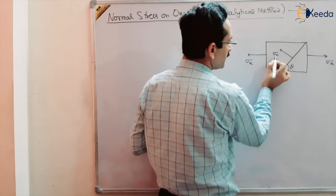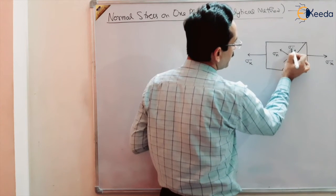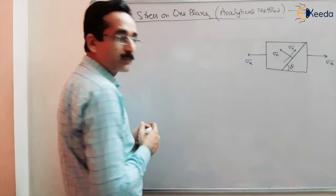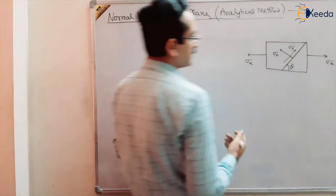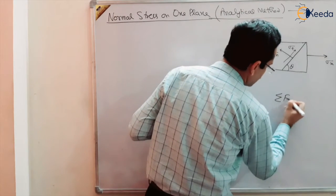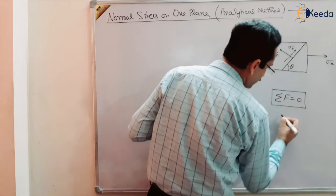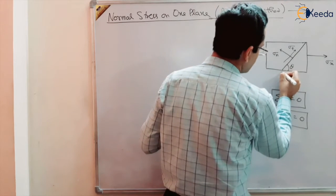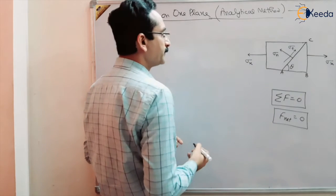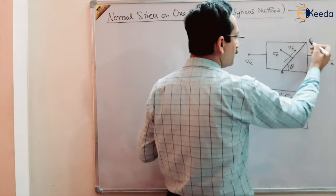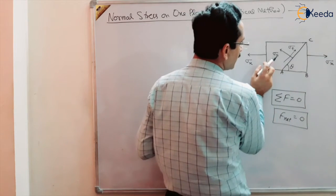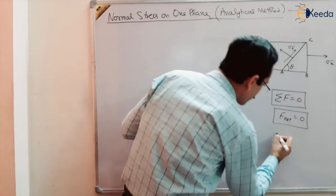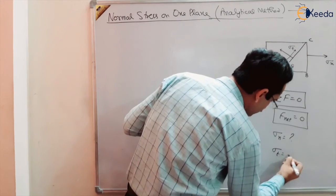Suppose this is our sigma n, which we want to find out, and this is our tangential stress or shear stress — we are showing it as sigma t. So how to solve this problem and find out sigma n and sigma t. We are using the analytical method and applying the condition that the net force in any direction equals zero. Let us name this element: this is A, this is B, this is C. On face AB, no stress is applied. On face BC, the stress is sigma x. On face AC, the required quantities are sigma n and sigma t — normal stress and shear stress. Our aim is to find sigma n and sigma t at angle theta, which is given.